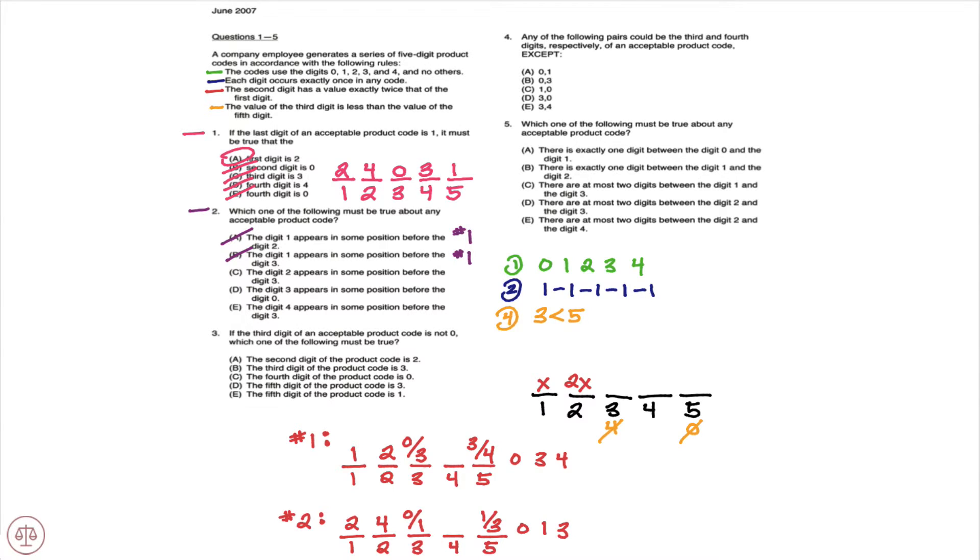C, the second digit appears in some position before the third digit. And if you notice in our two scenarios, in scenario one, digit two is second and three would come somewhere in three, four, or five, which clearly means that two appears before three. In scenario two,